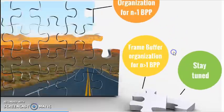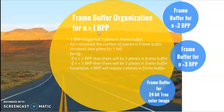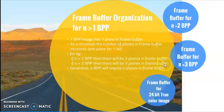We move on to frame buffer organization for n greater than one bit per pixel. As we saw in the last lecture, the moment I increase the number of bits, the number of shades of color increases. One bit per pixel gives one plane in the frame buffer. As n increases, the number of planes in the frame buffer increases — one plane per bit. So if I have two bits per pixel, I'll have two planes; three bits per pixel gives three planes. To generalize: n bits per pixel requires n planes in the frame buffer.